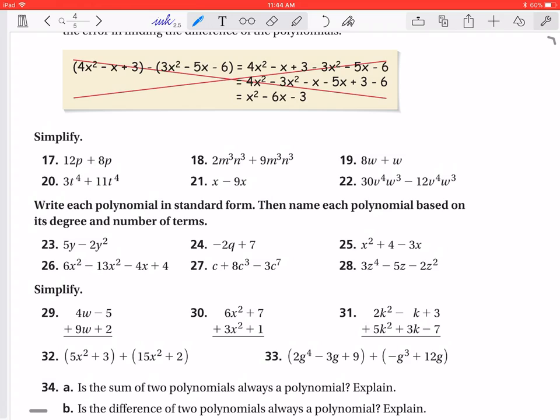I'm going to simplify number seventeen. Let's talk about that one. So they have the same degree of the exponents or the same degree. So I can just add these two together. So 12 plus 8 will give us 20. So this is going to be 20P.